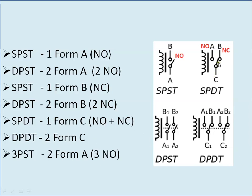Form C is also known as single pole double throw. It has one pole, and double throw means two positions — one NO and one NC. Similarly, double pole double throw requires two Form C devices, providing two poles each with two different positions.